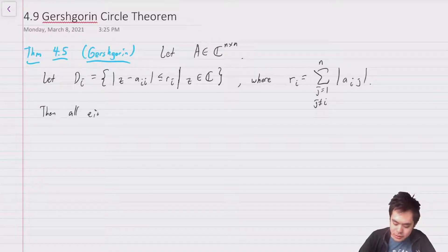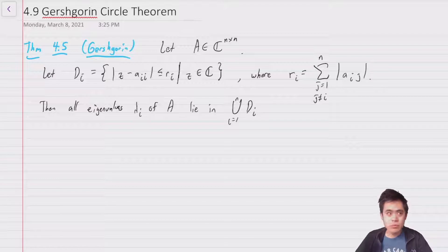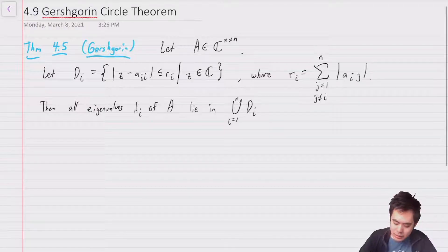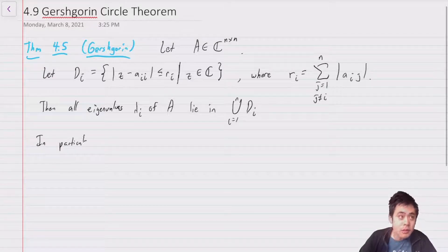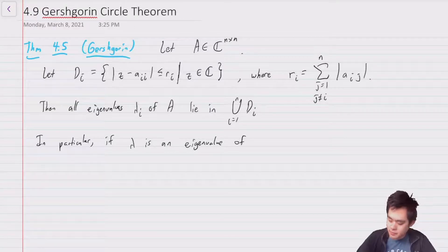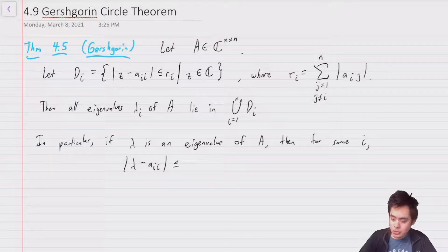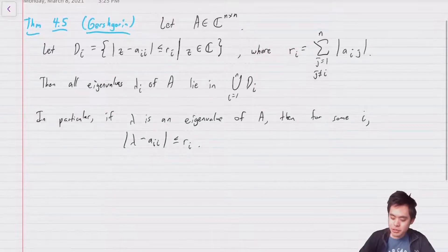And basically what we're saying is that there's a disk around the element a_{ii}, so that diagonal element where you take the sum of the modulus of all the other elements. Then all eigenvalues λ_i of A lie in the union over i equal 1 to n of D_i. And in particular, if λ is an eigenvalue of A, then for some i, we know that |λ - a_{ii}| ≤ r_i. And so this is the Gershgorin circle theorem.